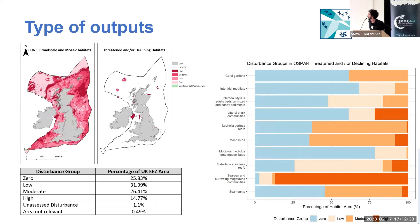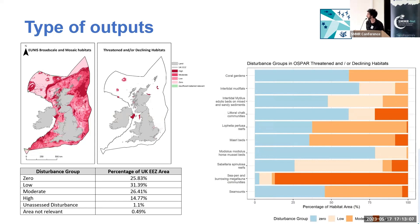Here you can see some examples of the types of outputs that the indicator can provide. These are taken from the analysis we conducted under the MSPACE project for the MSNMR network. We can produce a disturbance map — you can see an example of a disturbance map from fishing on broad scale habitat types and threatened and declining habitats. The indicator can also provide summary statistics, such as the percentage of an assessment area under the different disturbance groups, or in more detail, the percentage of a particular habitat type that falls under certain disturbance groups.